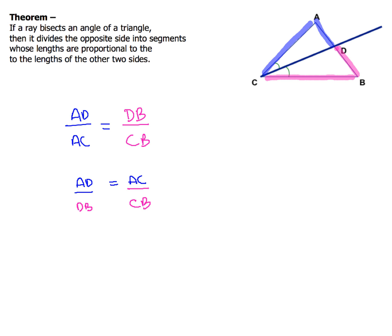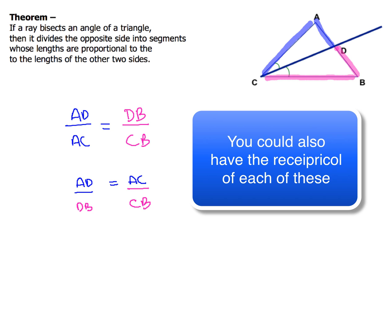So how'd you do with that? Did you get both of them? Now your letters might be a little bit different than mine. I have AD and you might have DA. Either way, we're talking about the same segment. So one of your options is AD over AC is going to be equal to DB over CB. And then another way you could have written that if you would have broken up the side where the angle bisector goes through, you could have had AD over DB is equal to AC over CB, the two side pieces. So either one of those and you're good to go.